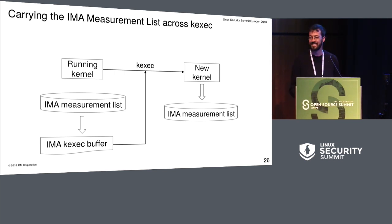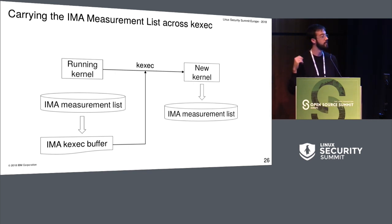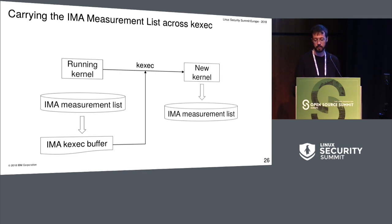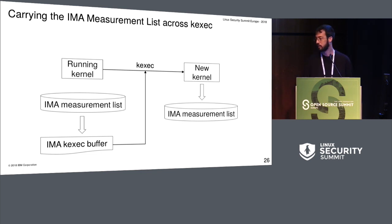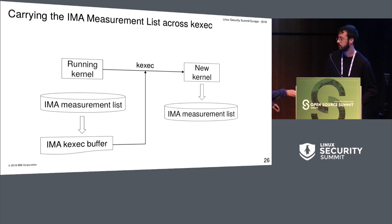This summarizes how we solved the first issue — the problem with extended attribute signatures — by using the module signatures. Now Nina will talk about the other points.